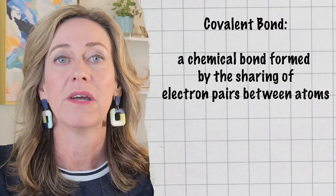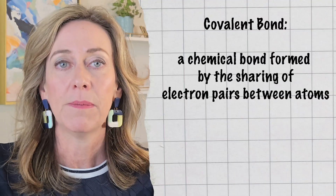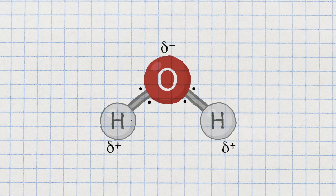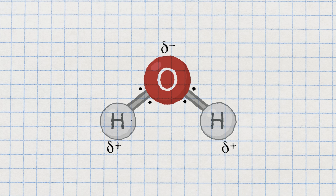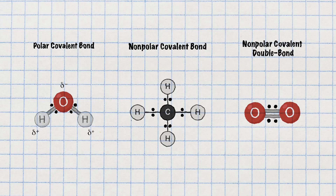Atoms can also bond by sharing electrons. When electrons are shared, they create what's called a covalent bond, and the atoms form molecules. For example, in water, one oxygen and two hydrogen atoms share electrons, forming H2O. These covalent bonds are incredibly strong, making water a very stable molecule. However, not all atoms share equally — covalent bonds can be polar or non-polar, depending on how equally the electrons are shared.